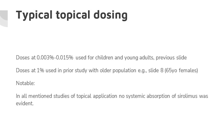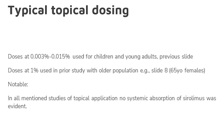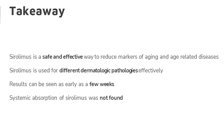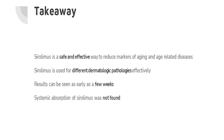For typical topical dosing: doses at 0.003% to 0.015% were used for children and young adults treating angiofibromas. Doses at 1% were used in the prior study with an older population — that was the one involving collagen biomarkers. Notably, no systemic absorption of sirolimus was evident in either case. Takeaway: sirolimus, also known as rapamycin, is safe and clearly effective as a way to reduce markers of aging, age-related diseases, and photoaging.